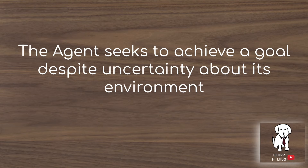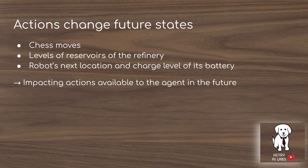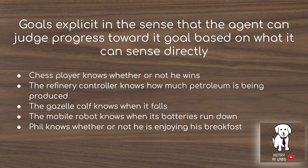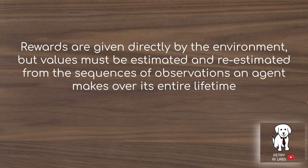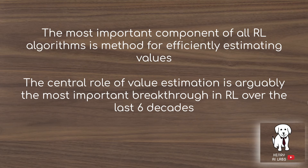The agent is seeking to achieve a goal despite uncertainty about its environment, and its actions can change future states. Goals are explicit in the sense that the agent can judge progress based on what it can sense directly: the chess player knows whether he wins, the refinery controller knows how much petroleum it's producing, the gazelle calf knows when it falls, the mobile robot knows when its battery runs out, and Phil knows whether or not he's made breakfast. Rewards are given directly by the environment, but intermediate state value functions must be estimated and re-estimated — this is essentially what the reinforcement learning agent is learning over its lifetime. The most important component of RL algorithms is efficiently estimating these value functions of states, and designing more efficient ways of value estimation has been one of the biggest breakthroughs in reinforcement learning over the last six decades.